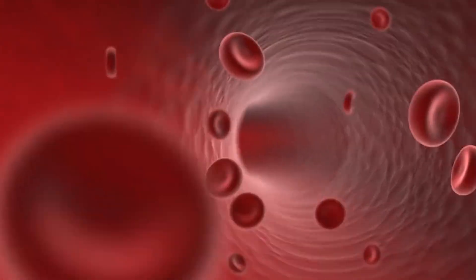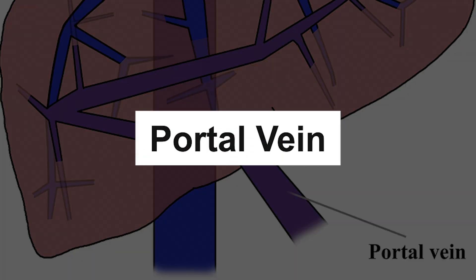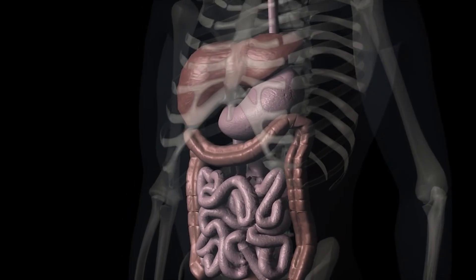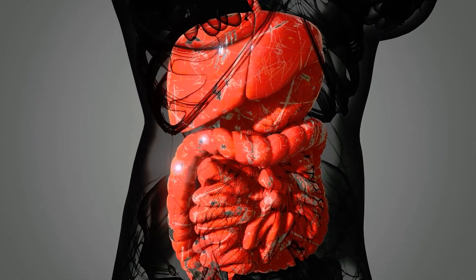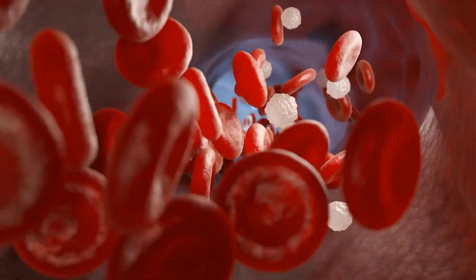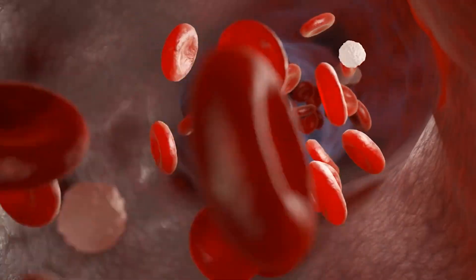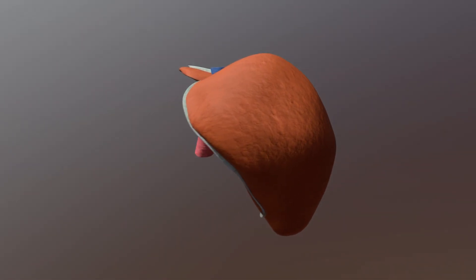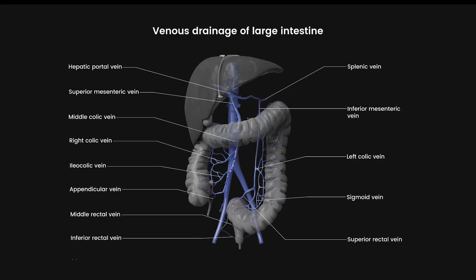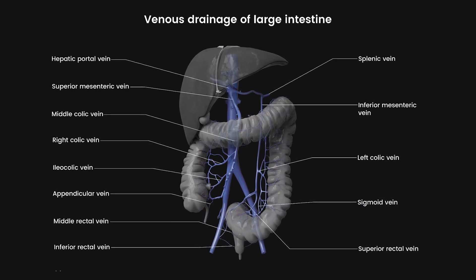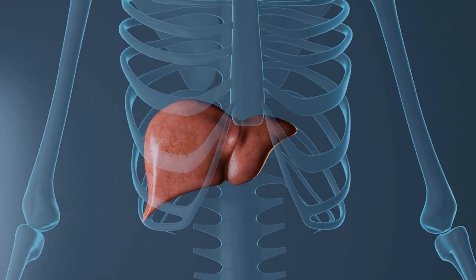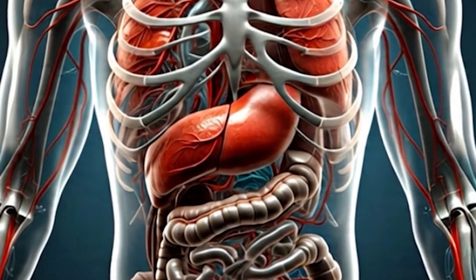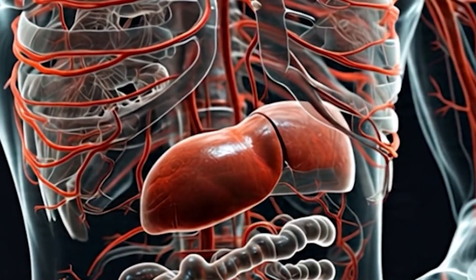The hepatic artery provides the liver with oxygen and nutrients. Portal vein. The portal vein is a major blood vessel that carries nutrient-rich blood from the digestive organs to the liver. It collects blood from the stomach, intestines, spleen, and pancreas and delivers it to the liver. This blood is rich in the products of digestion, including nutrients and toxins. The liver plays a vital role in processing these substances and regulating blood sugar levels. Hepatic portal system. The hepatic portal system is a unique circulatory system involving the portal vein. It allows the liver to filter and process nutrients, medications, and toxins before they enter the general circulation. This system is essential for detoxification and the regulation of various metabolic processes.